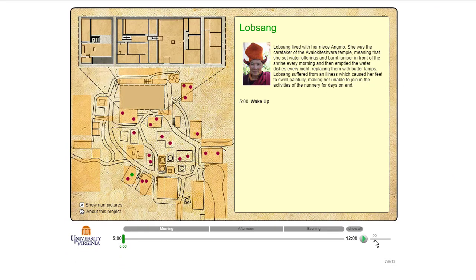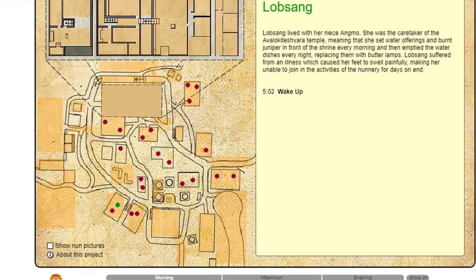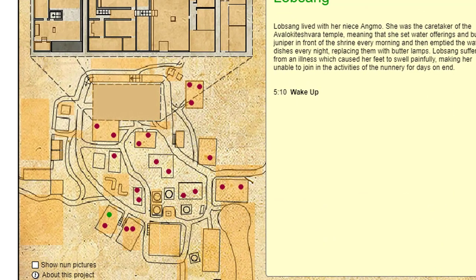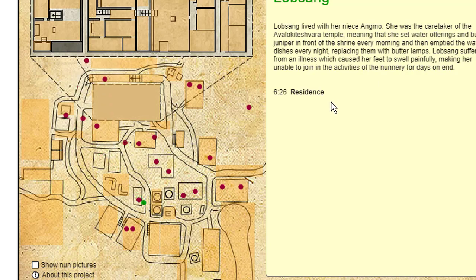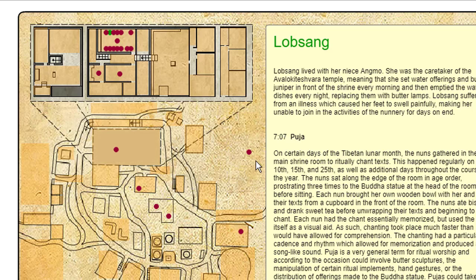I'm going to make it kind of slow and play it. Now we can see she wakes up. If you follow the green dot here, she goes to various things, and it talks about what she did. So we're following any given person around, and they all go into Frapuja, which is a religious service there.